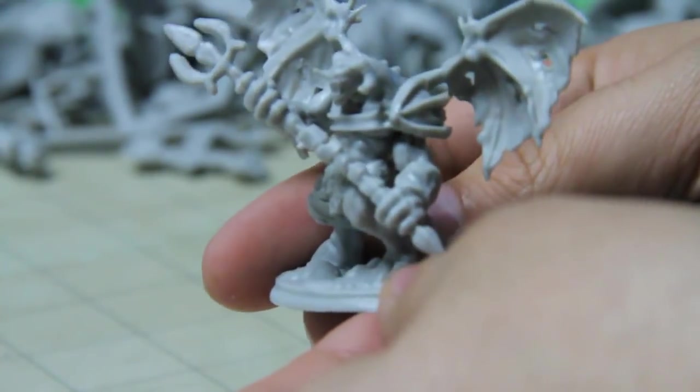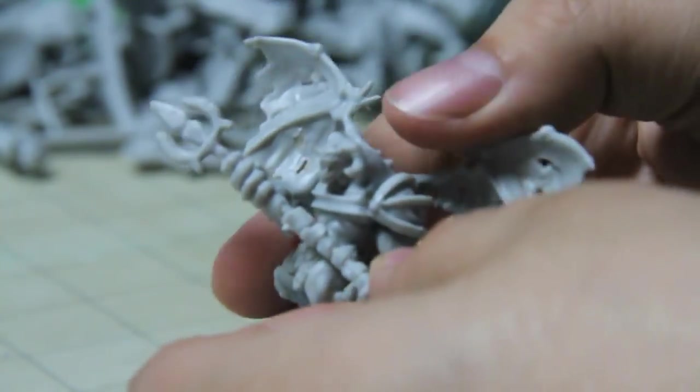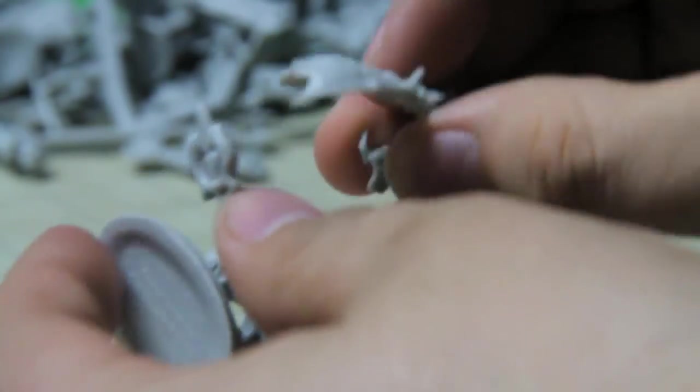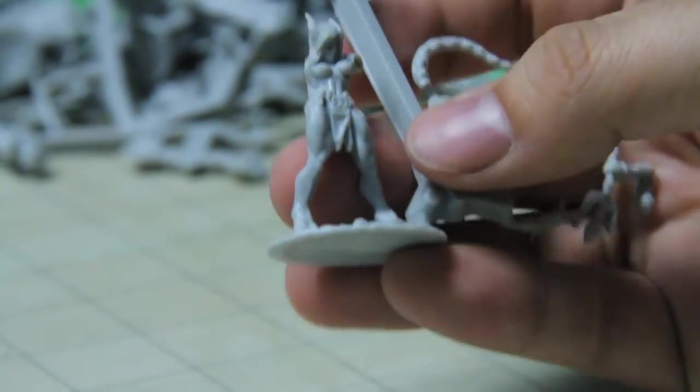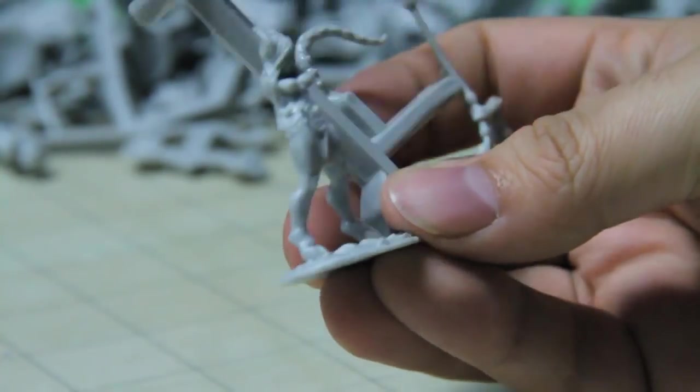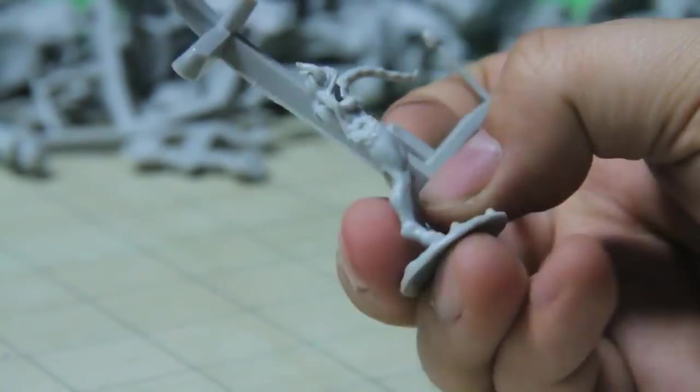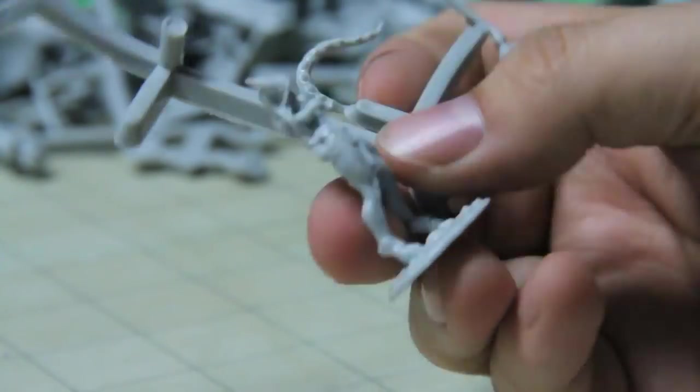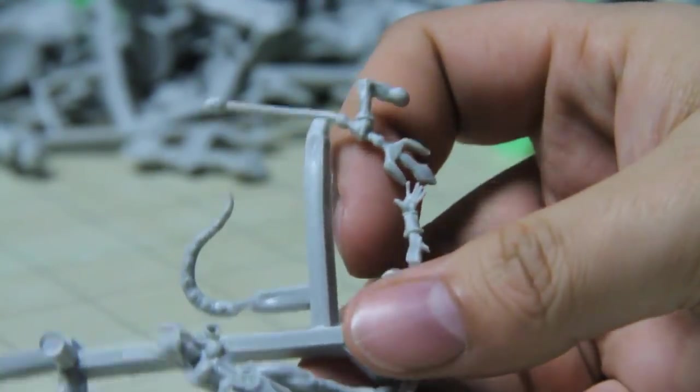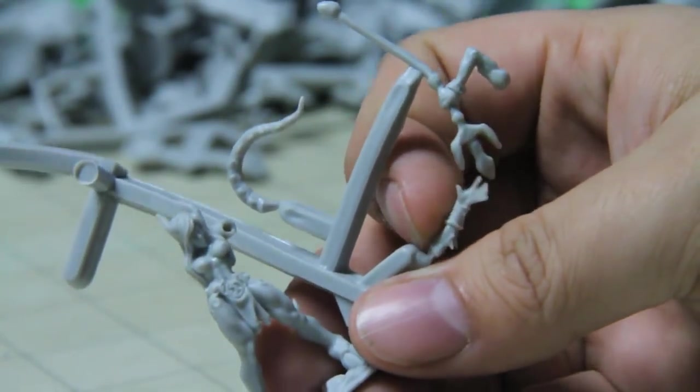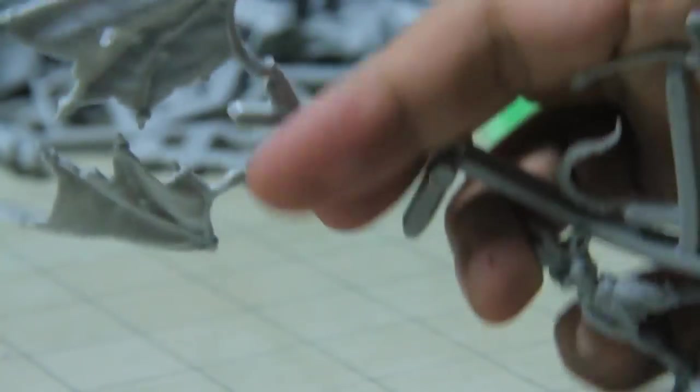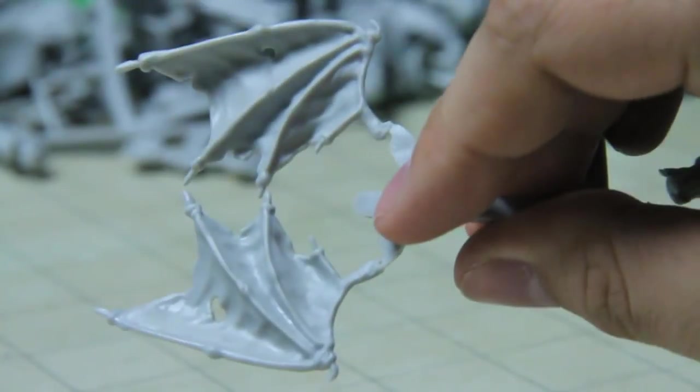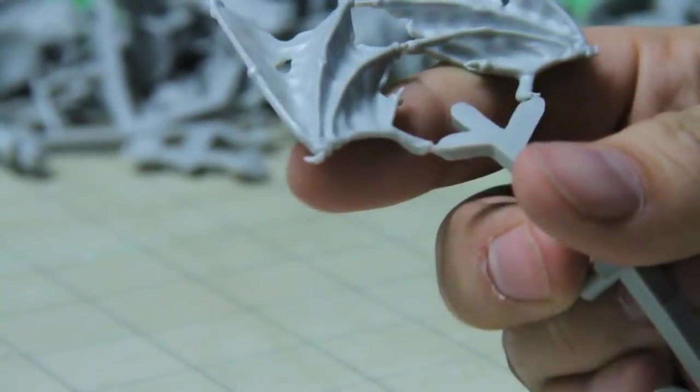And this one's sort of a female of the species. Same hoofed feet. Got horns. Tail. She has a trident in one hand. And then more wings. Not quite as many holes in them, but still can't be good for being able to fly there.